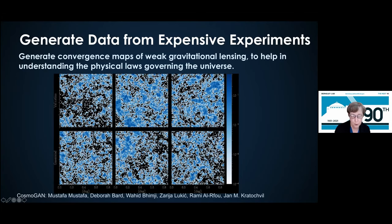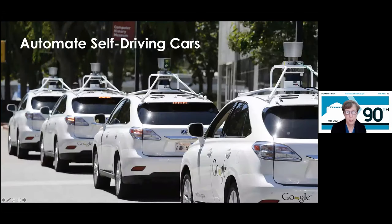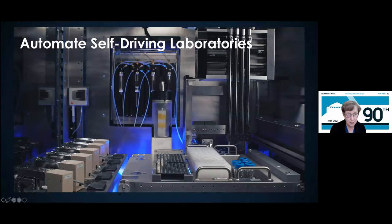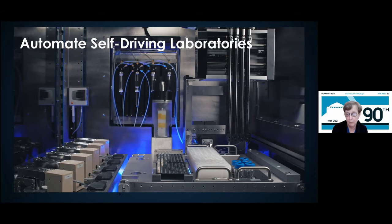The last idea is automating processes, like self-driving cars. We have a phrase we like to use here at the lab: self-driving laboratories. We automate all of the processes scientists may use at the lab, getting much more precise control over experiments, doing them much more efficiently and at a much broader scale.